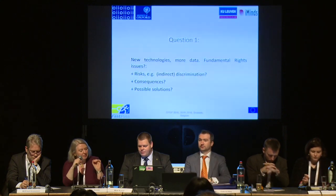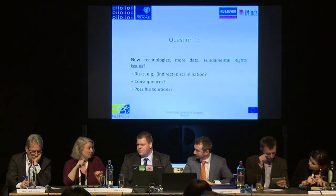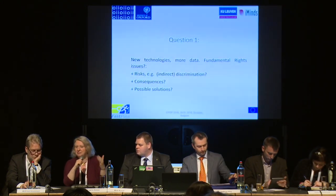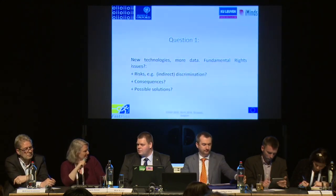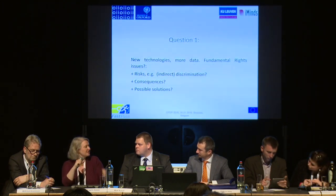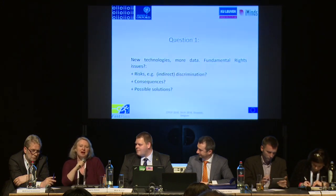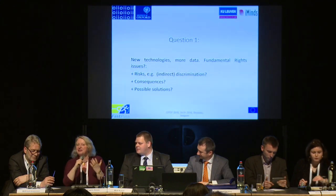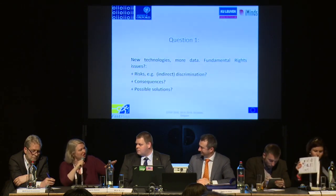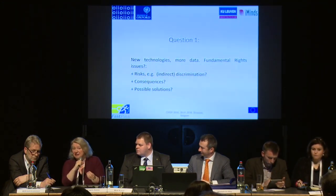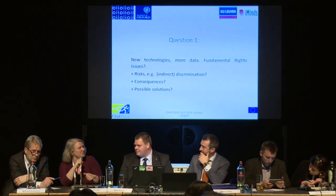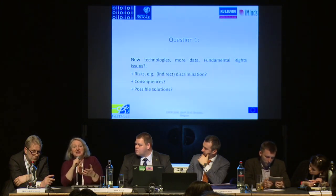The first frequent traveler system at Heathrow — the Iris system — was introduced about 10 to 12 years ago for non-EU travelers. Within months, many UK and EU citizens were banging on the door of the enrollment office wanting to use it, because their lived experience was that they could get stuck in long queues at the EU border as well and wanted any way to get through faster.